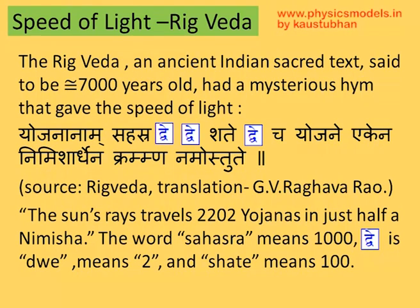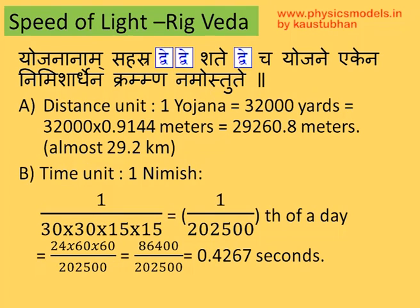Now, we must understand the unit of distance and the unit of time that they used in those days and make our calculation for the speed of the sun's rays. One yojana distance is equal to 32,000 yards, and one yard is 0.9144 meters. So, converting to SI units, one yojana becomes 29,260.8 meters — that's roughly 29 kilometers.